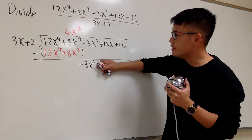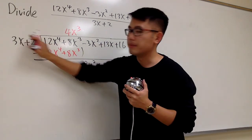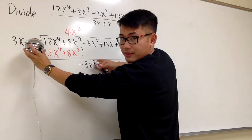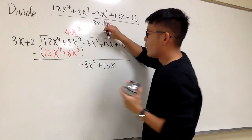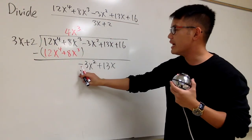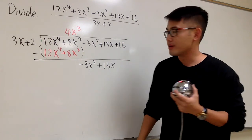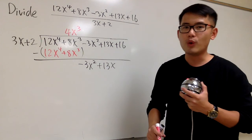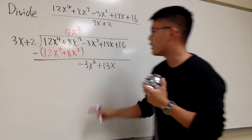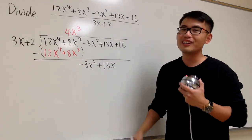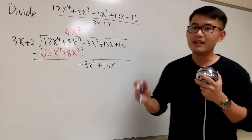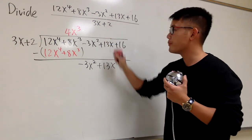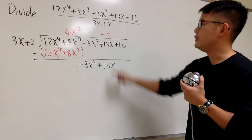Now cover this up and cover that up — just the first terms. What times 3x will give me negative 3x squared? For the number: 3 times negative 1 gives negative 3. For the variable: x to the 1st times x gives x to the 2nd. So I need negative x. That's the x term, so I'm going to line it up and put down negative x.